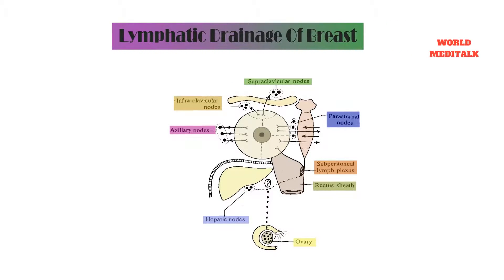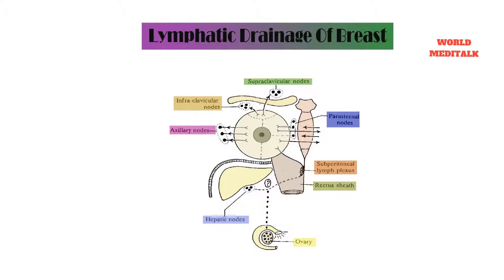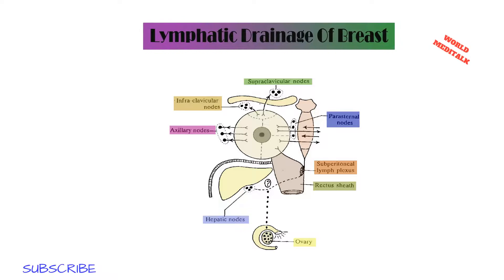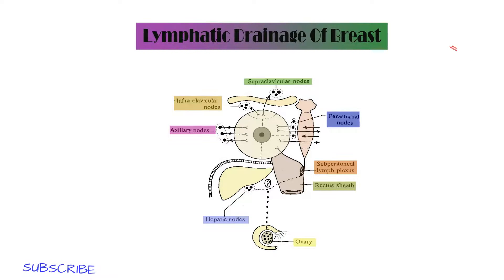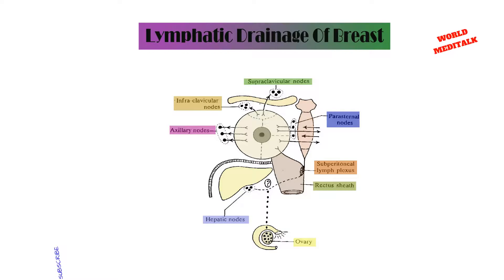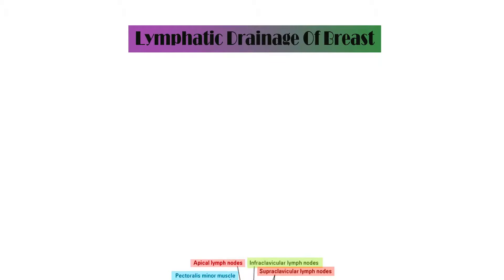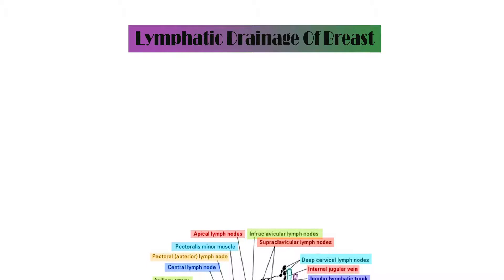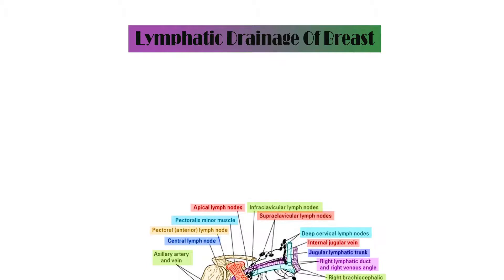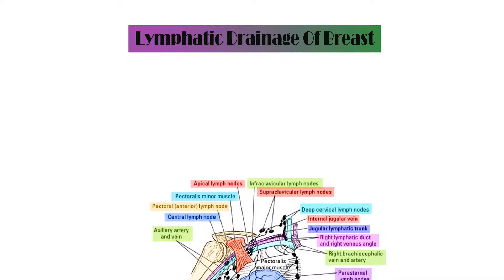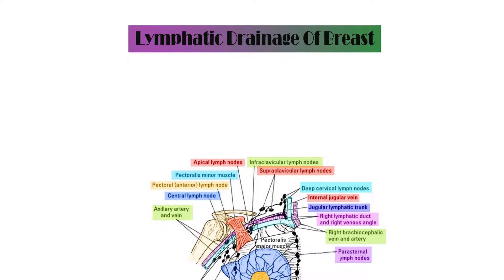The medial half of the breast mostly drains into the internal mammary group, also called the parasternal lymph nodes. Importantly, the internal mammary group not only drains the inner half of the breast but also some portion of the lateral aspect. A plexus of lymph vessels is present deep to the areola, called the subareolar plexus of Sappey, and most of the lymph of the breast drains into the anterior or pectoral group of lymph nodes.